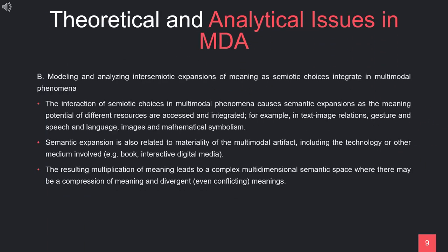The next issue is modeling and analyzing intersemiotic expansions of meaning as semiotic choices integrate in multimodal phenomena. The interaction of semiotic choices in multimodal phenomena gives rise to semantic expansions as the meaning potential of different resources are accessed and integrated, for example, in text-image relations and language, image and mathematical symbolism. In other words, the combination of various semiotic modes and resources produces an expansion of meaning. This semantic expansion is also related to the materiality of the multimodal artifact, including the technology or medium involved, for example, book or interactive digital medium. Digital media allows the combination of different semiotic modes — text, image, speech — all at once.